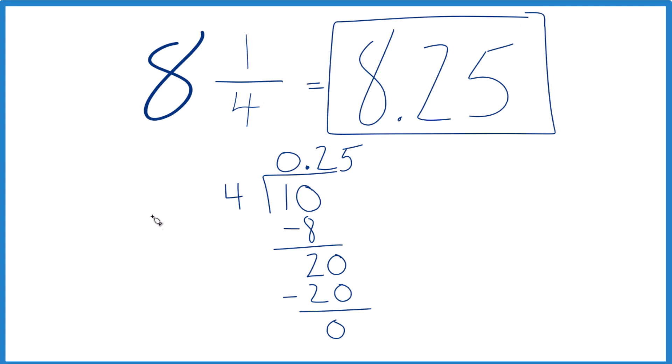So in answer to our question, the fraction 8 and 1/4 equals the decimal 8.25.